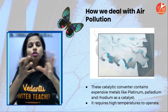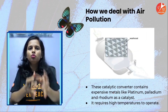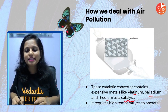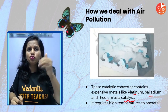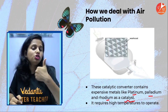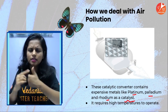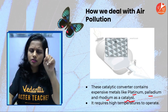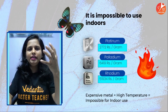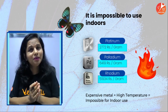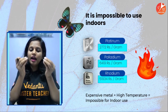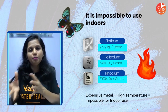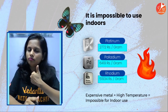The catalytic converters used in air purifiers make use of certain expensive metals — specifically platinum, palladium, and rhodium as catalysts. These require an extremely controlled environment for operation. Secondly, high temperature is required for their optimum functioning. For industries and vehicular emissions, that's fine, but when it comes to home air purifiers, it becomes extremely difficult to incorporate these kinds of catalytic converters.